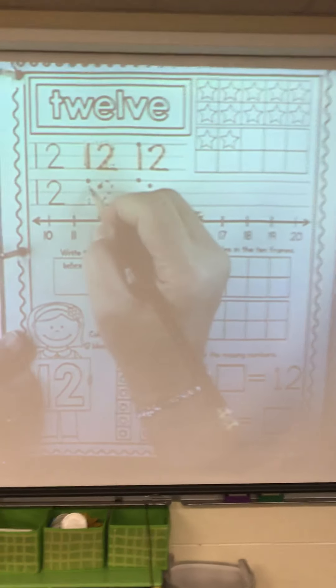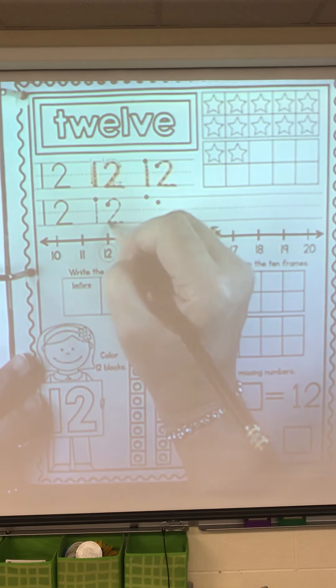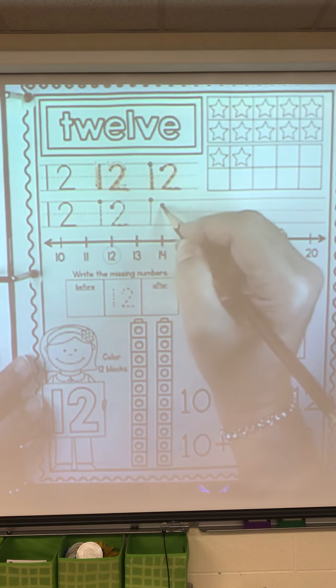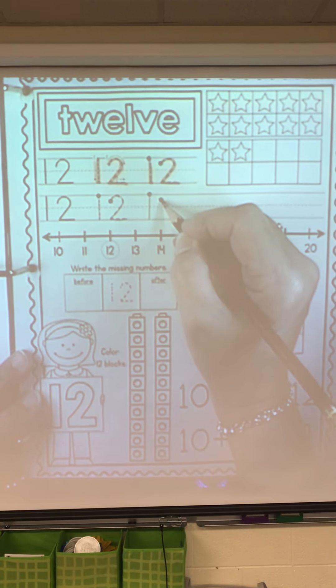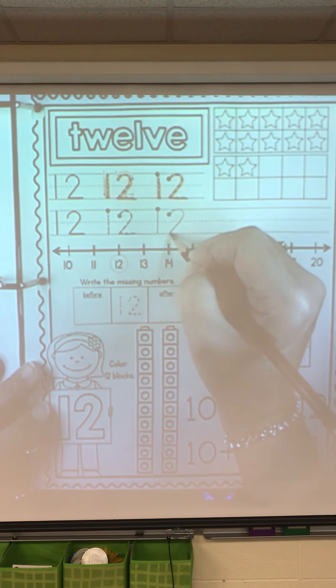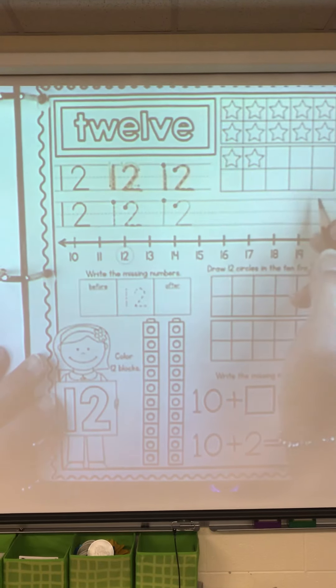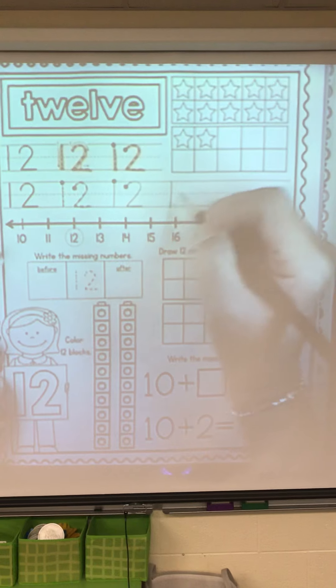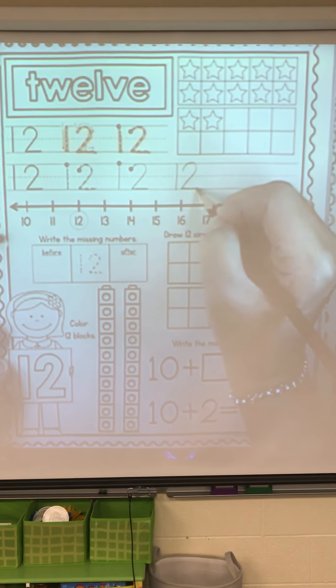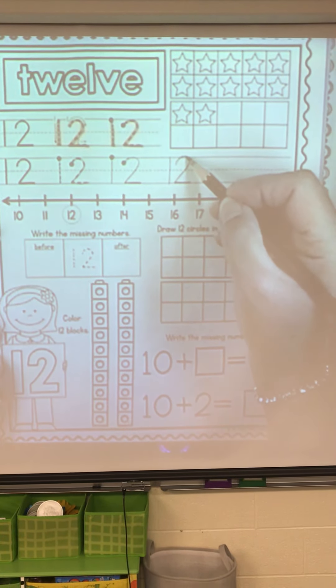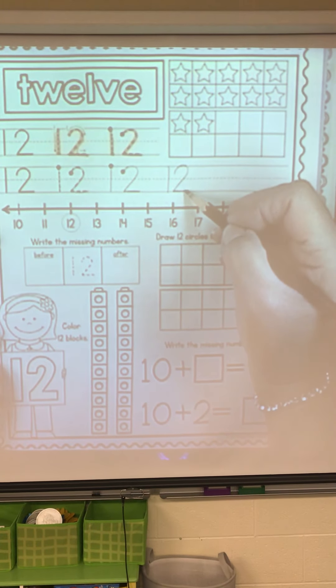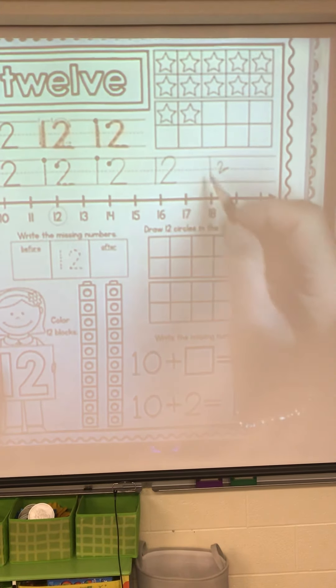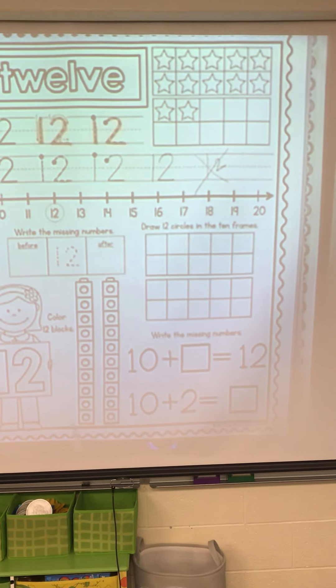I like how they put the dot down here. So we curve up, slant down, go across. That's a 12. Let's make one more 12. Make a 1, then a 2. And do you notice the 2 touches the top line and the bottom line? Not like this. Is that how we make a 12? No, no, no.